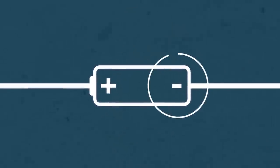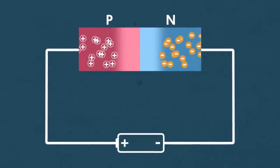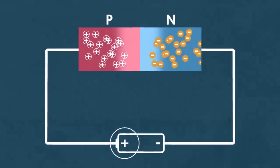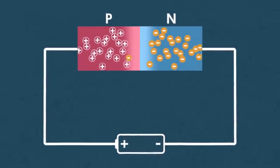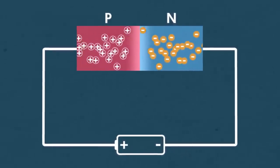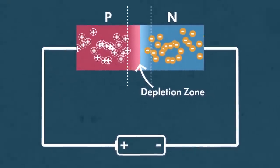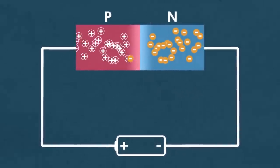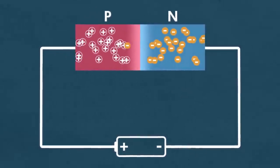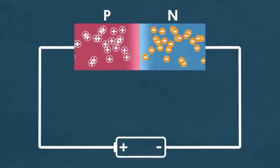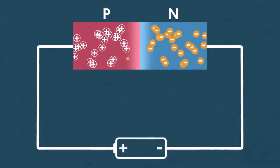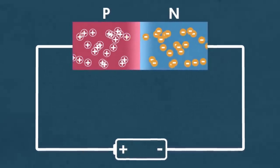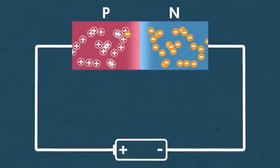What if we switch the battery around? Now the negative terminal of the battery is pushing electrons into the N-type semiconductor, and the positive terminal is pushing holes into the P-type semiconductor — pushing those electrons and holes towards the junction. This shrinks the depletion zone. And with a large enough voltage from the battery, electrons are actually able to jump across this reduced depletion zone — they hop into the holes in the P-type semiconductor. And suddenly you can have a flow of electrons through the diode. With the battery oriented this way, electricity is able to flow, and the diode has fulfilled its purpose.